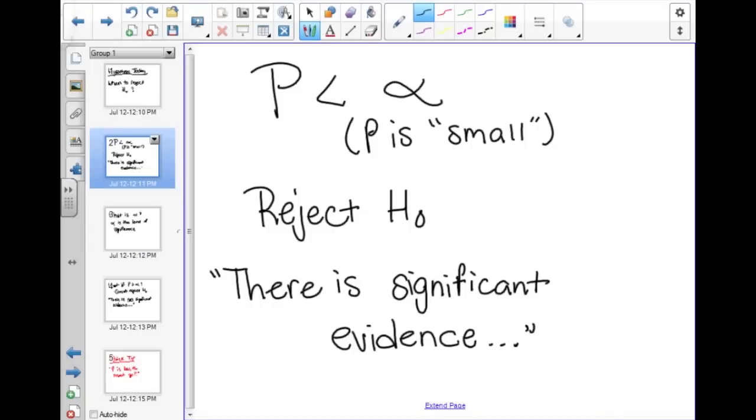Well, once you find your P, if P is less than alpha you reject H₀. In your answer you will say there is significant evidence if P is less than alpha.